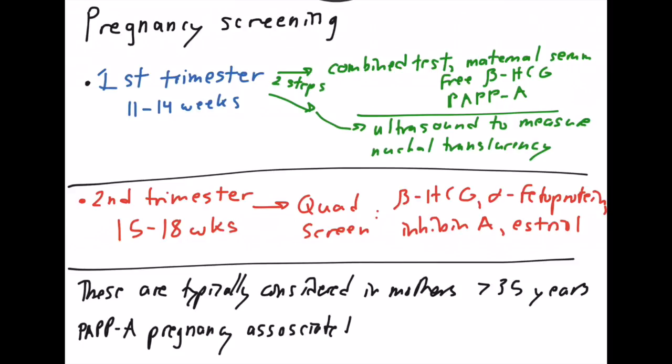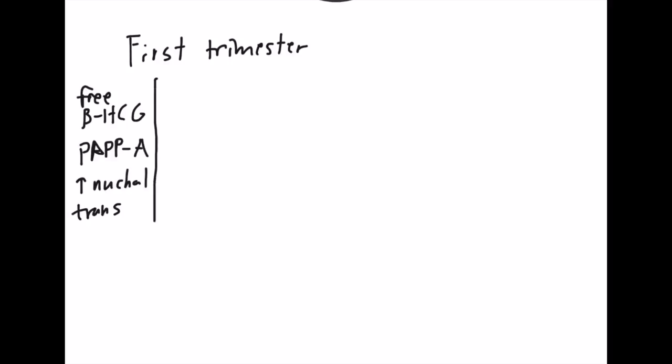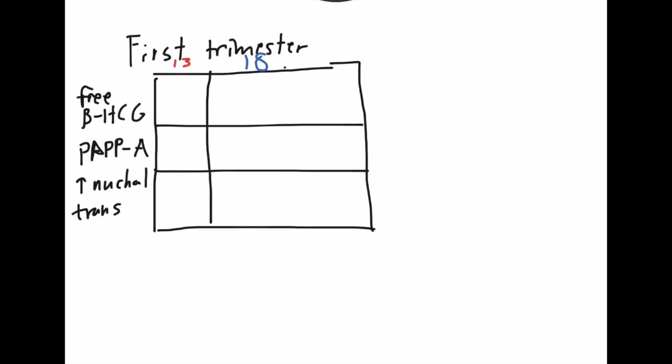This PAPPA, Pregnancy Associated Plasma Protein A. Let's look at the first trimester here and make a table and break it down for Patau, Edwards, and Down. So remember we were measuring the free beta HCG and this PAPPA protein. I'm also going to add the nuchal translucency even though it's a different test. Let's draw a quick little table. The three things that we're testing for are trisomy 13 Patau syndrome, trisomy 18 Edwards syndrome, and trisomy 21 Down syndrome.